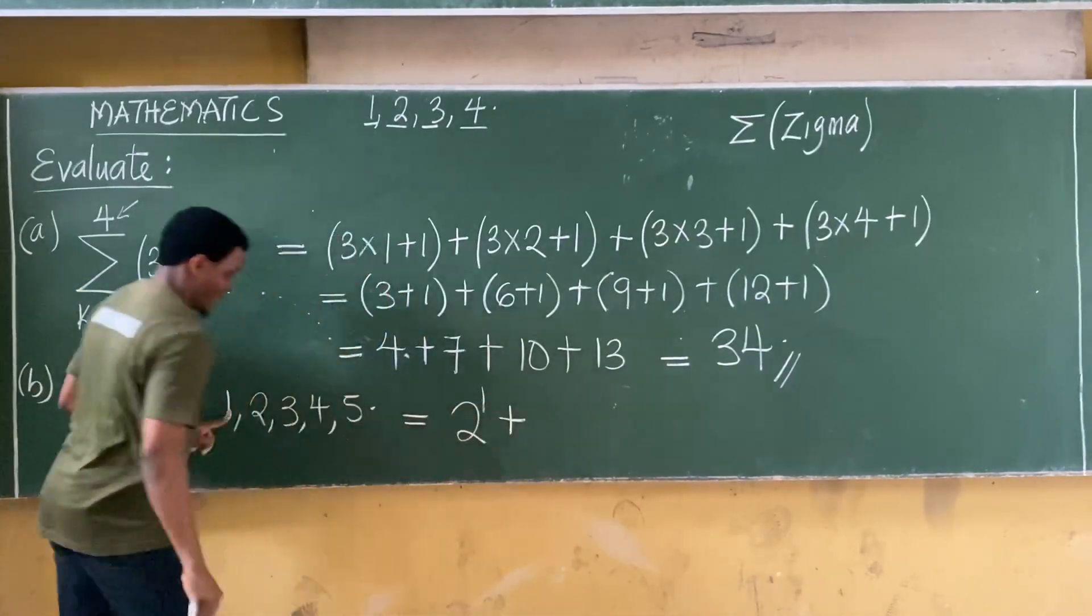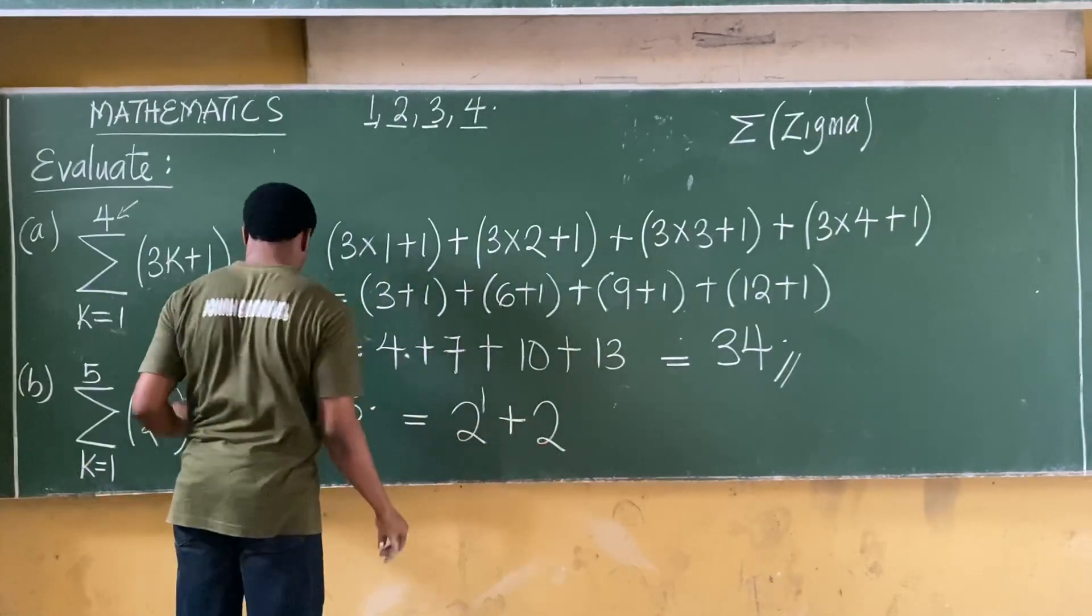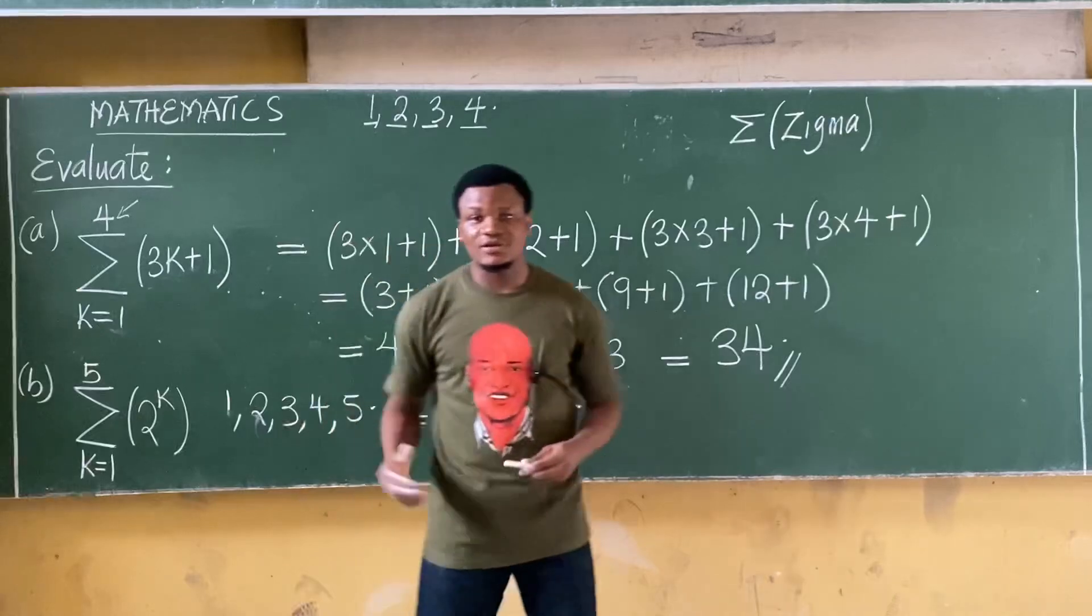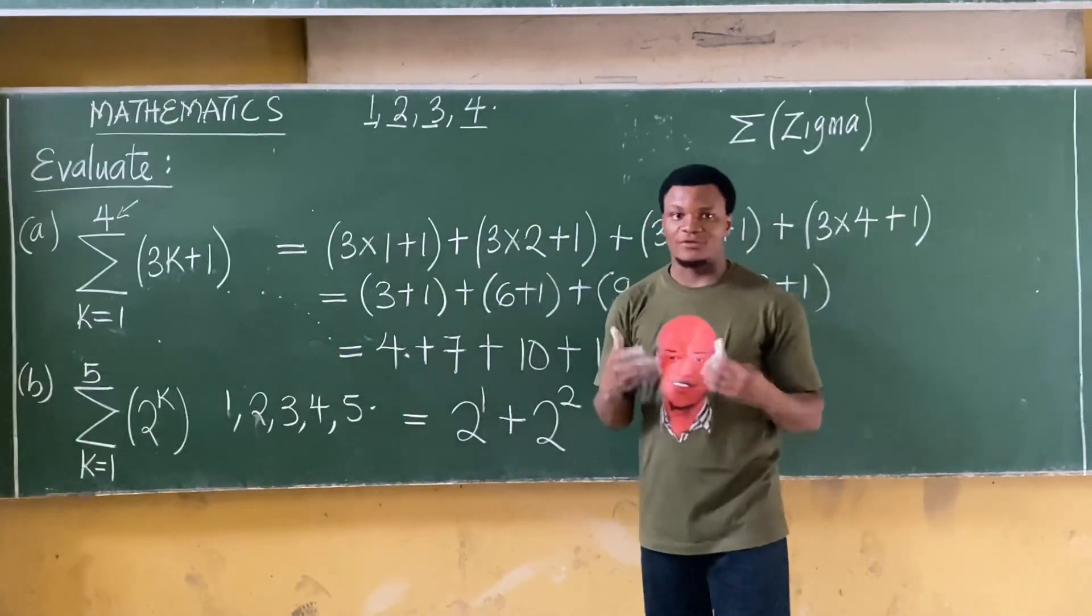Plus, take the second term, that becomes 2 raised to power k. K is 2. So you complete this, solve it, and then leave your answer in the comment section and I'll tell you if you're correct.